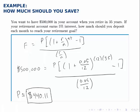What that means is, if I deposit $440 every month for the next 35 years, I can expect to have half a million dollars in this account when I retire.